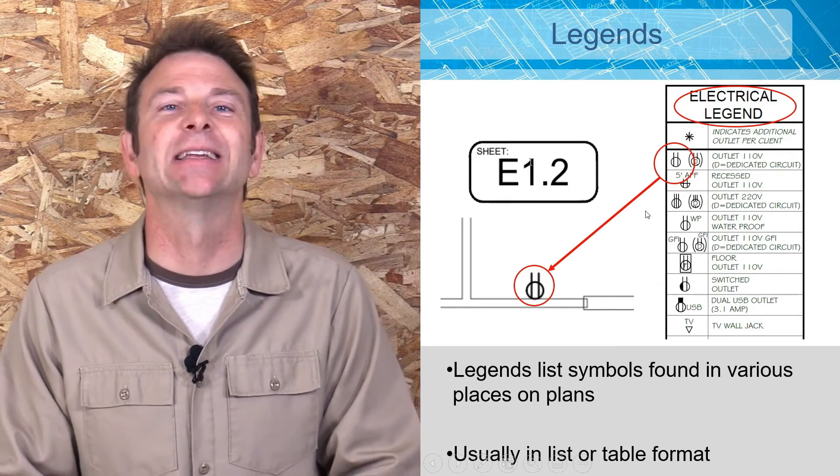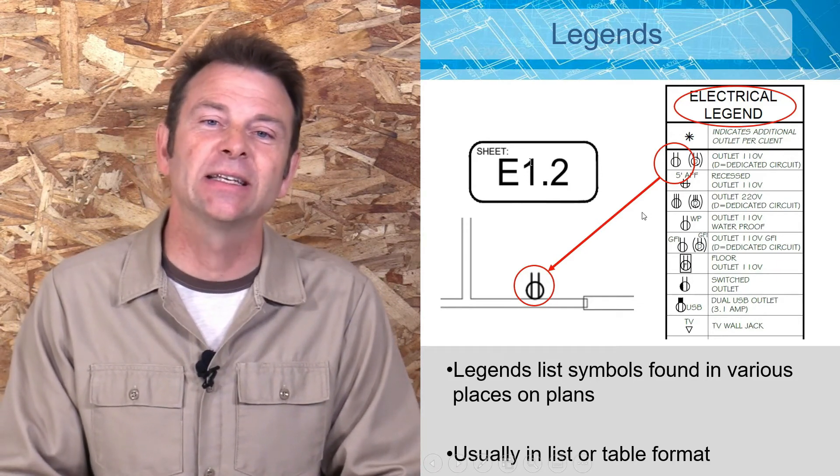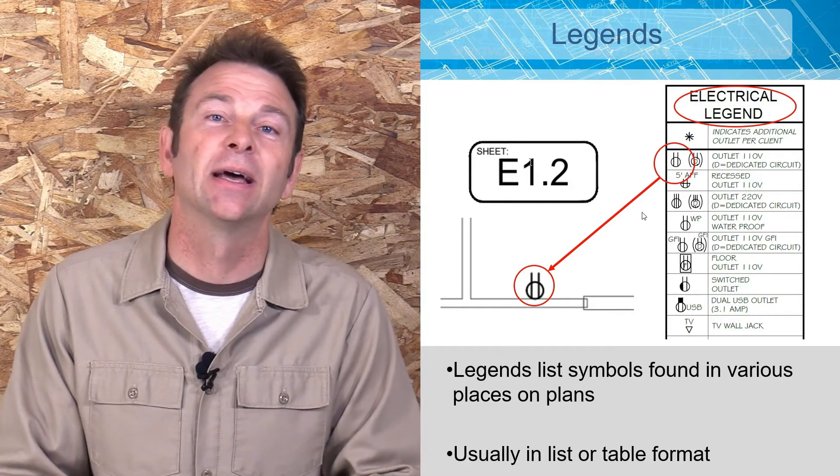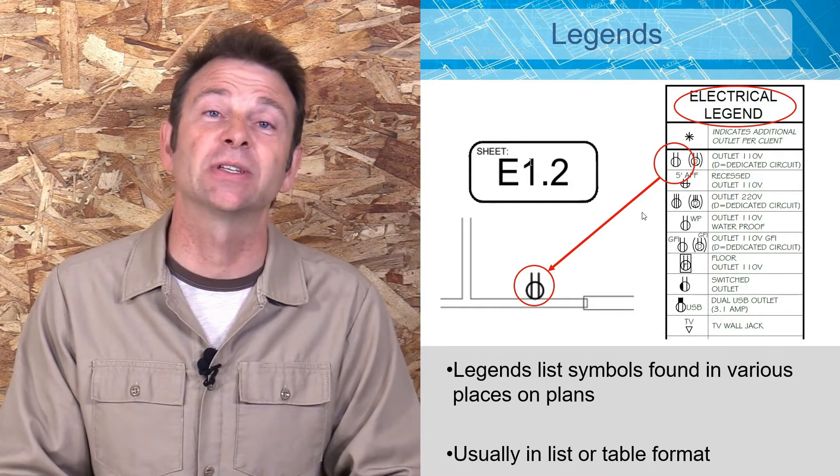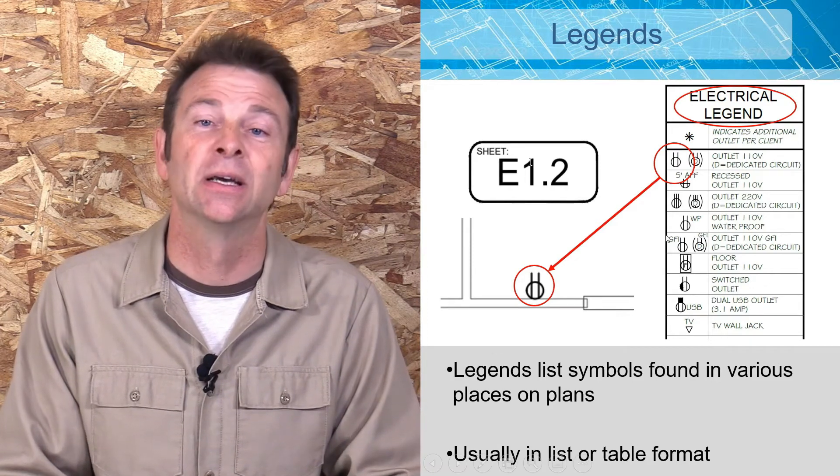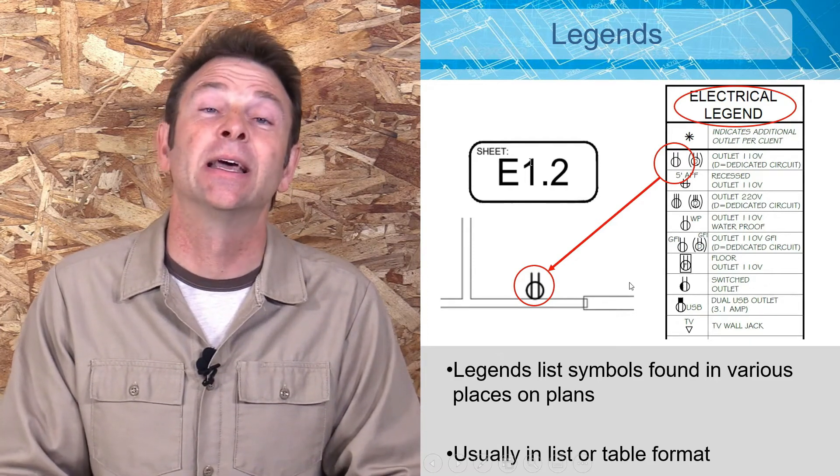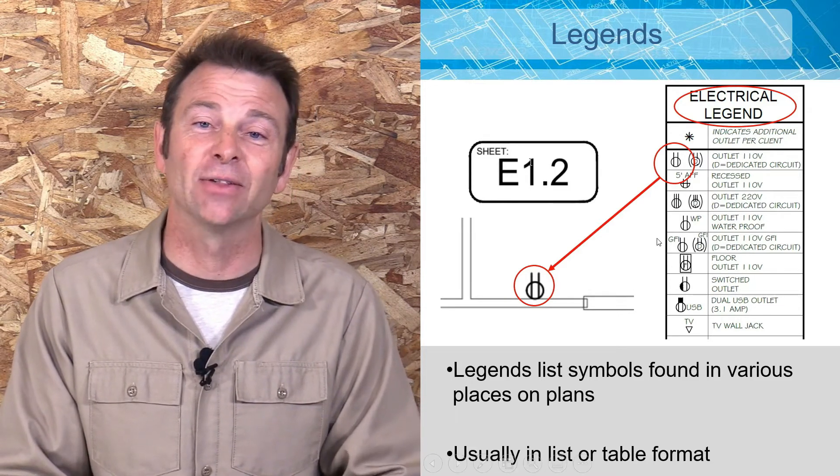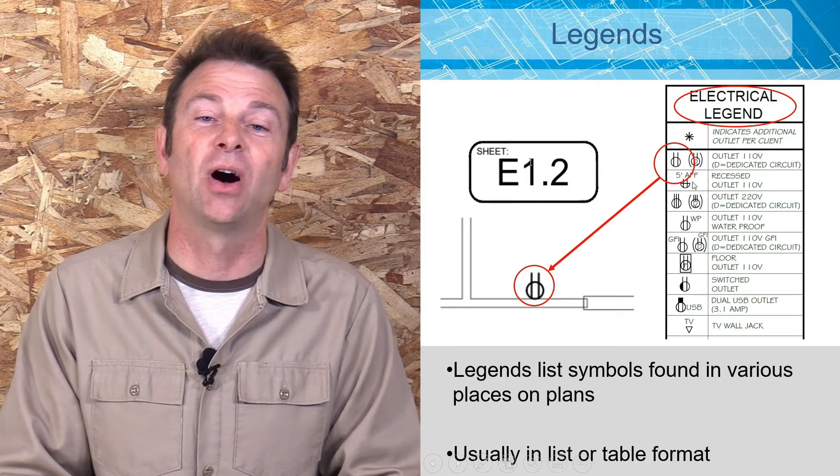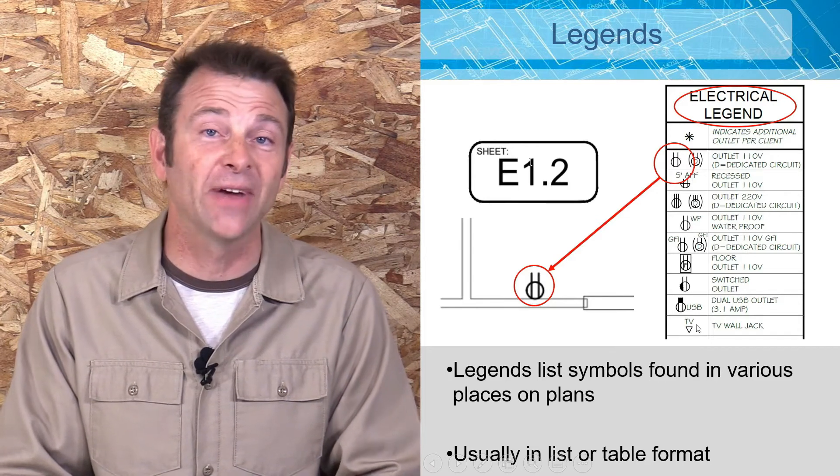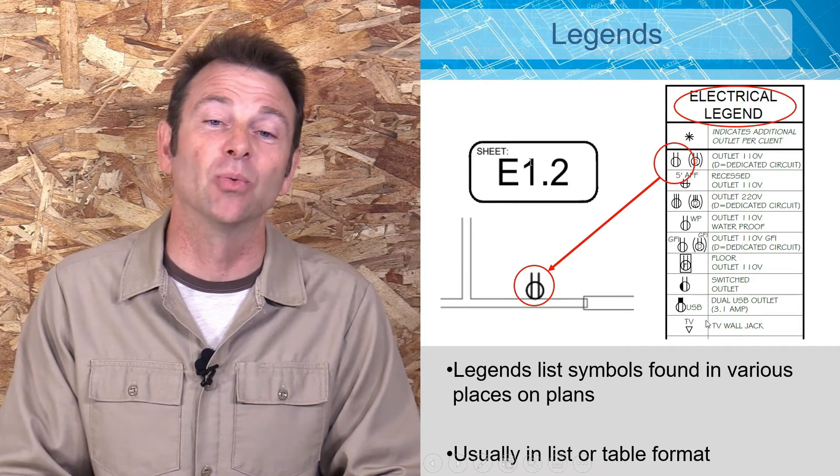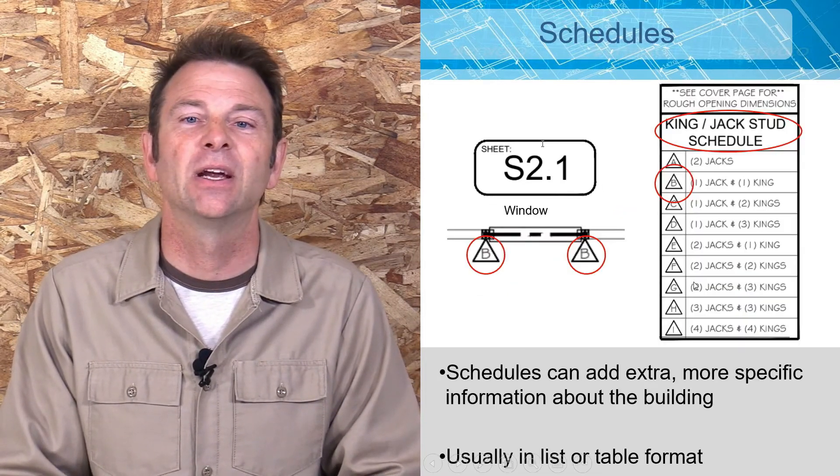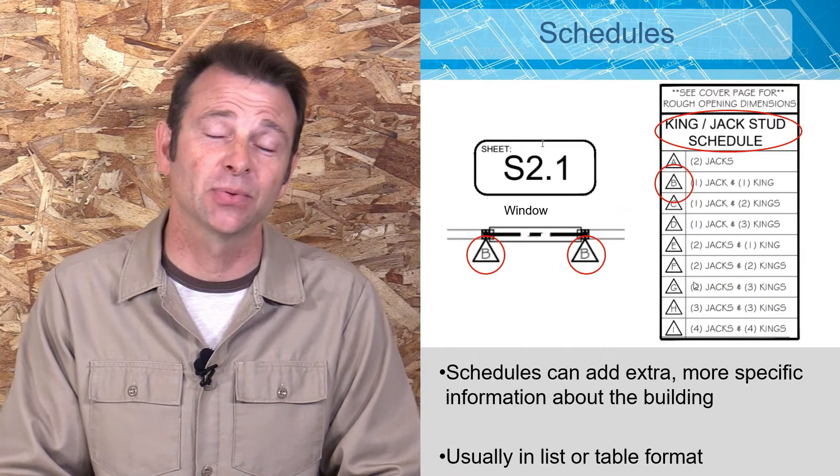Plans are a wealth of information and there are tons of legends in a set of plans. A legend is going to be a list of different items that will be found universally in several pages. So here you see a legend that is referencing a specific symbol for an outlet. This is an electrical legend, so all of these symbols will be found in these plans and you will reference these almost like a dictionary or an encyclopedia.